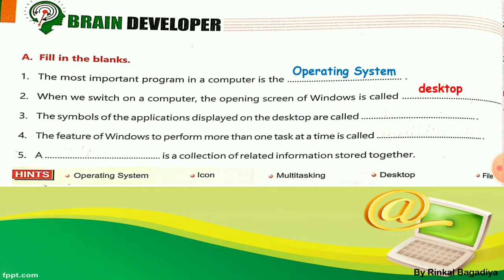Number 3: The symbols of the applications displayed on the desktop are called dash. On the desktop we find small pictures of applications. These are called? Yes — icon. Write in the third blank: I-C-O-N, icon.